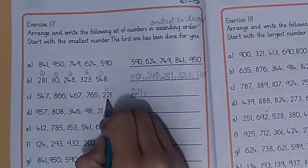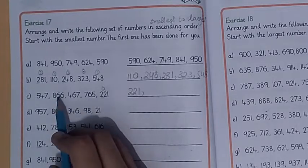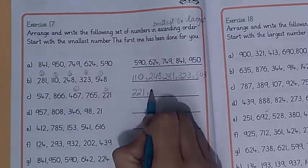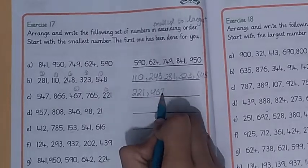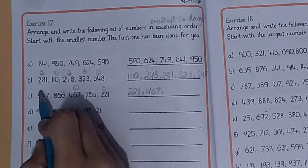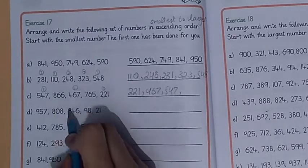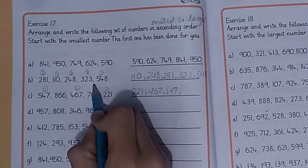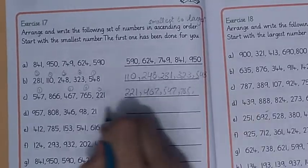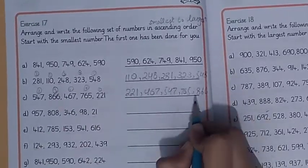The first number is 221, which is the smallest. The second place is 467, the third number is 547, the fourth place is 765, and the fifth one is 866.